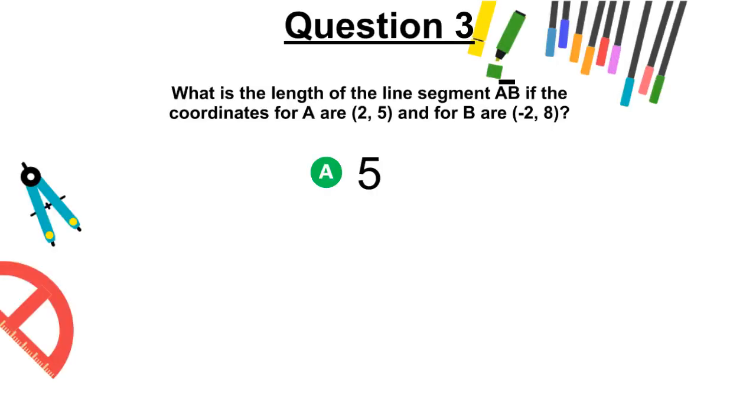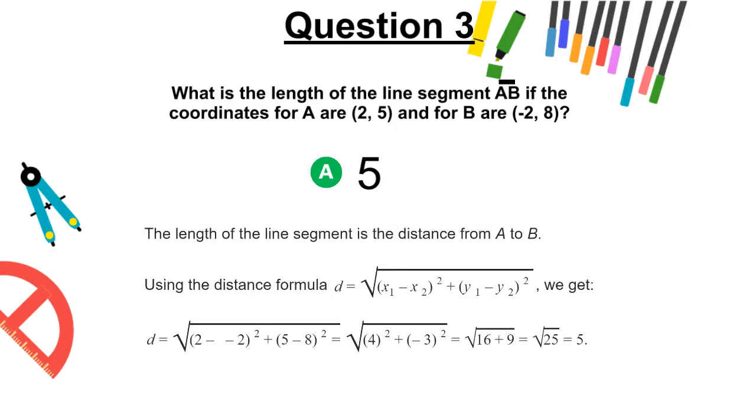The correct answer is A, 5. The length of the line segment is the distance from A to B. Using the distance formula here, we get the following.